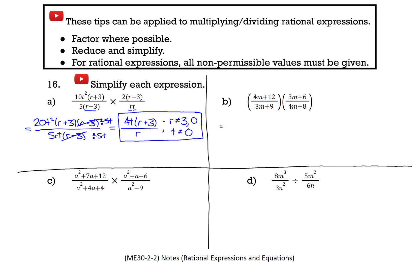In the top left, 4m and 12 are both divisible by 4, so take out 4 as a common factor. Below that, both terms are divisible by 3. The second numerator is also divisible by 3, and the second denominator is divisible by 4. So after factoring, I notice right away that a lot of things are going to cancel: (m plus 2) cancels (m plus 2), (m plus 3) cancels (m plus 3), 4 cancels 4, and 3 cancels 3 — and when multiplying fractions, you can cancel across different fractions as well.